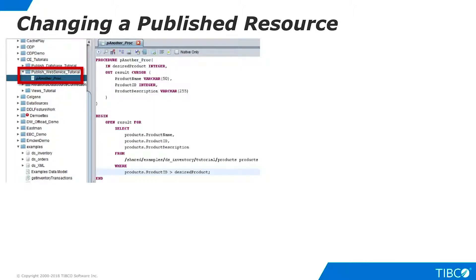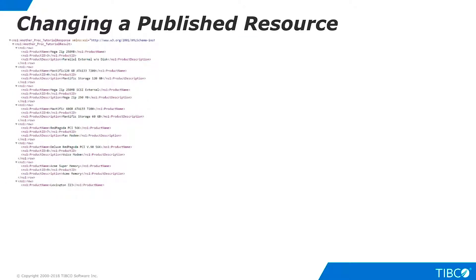Finally, let's see what happens as we make changes to published resources. Open the procedure you created for the last example — not the published procedure in the web service endpoint, but the procedure in your development folder. Change the procedure and save your work. Now test the published web service operation as before. It returns multiple rows now, indicating that our change from an equals condition to a greater than condition was automatically propagated to the published resource. No republish is required when changes are made to underlying resources.